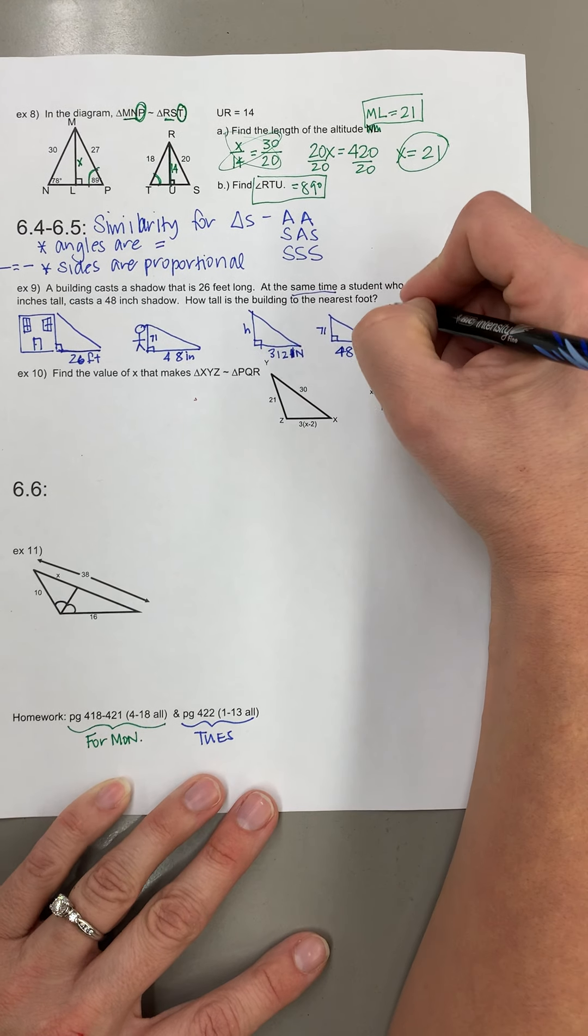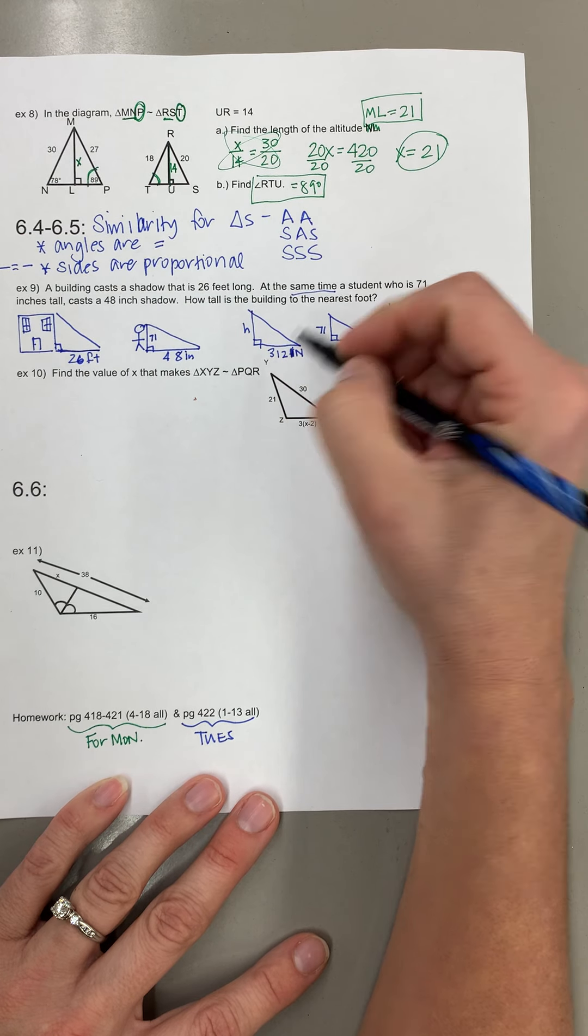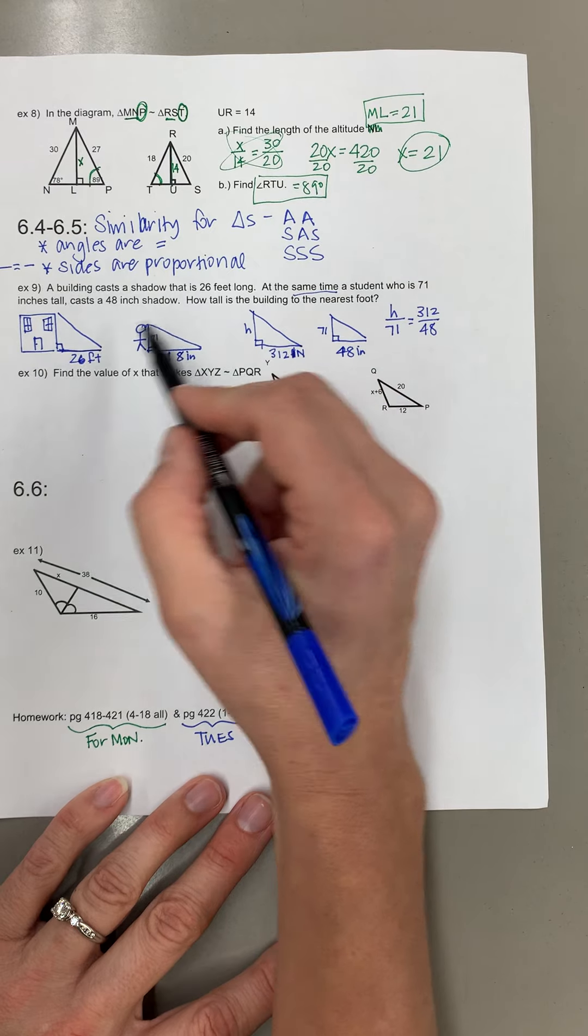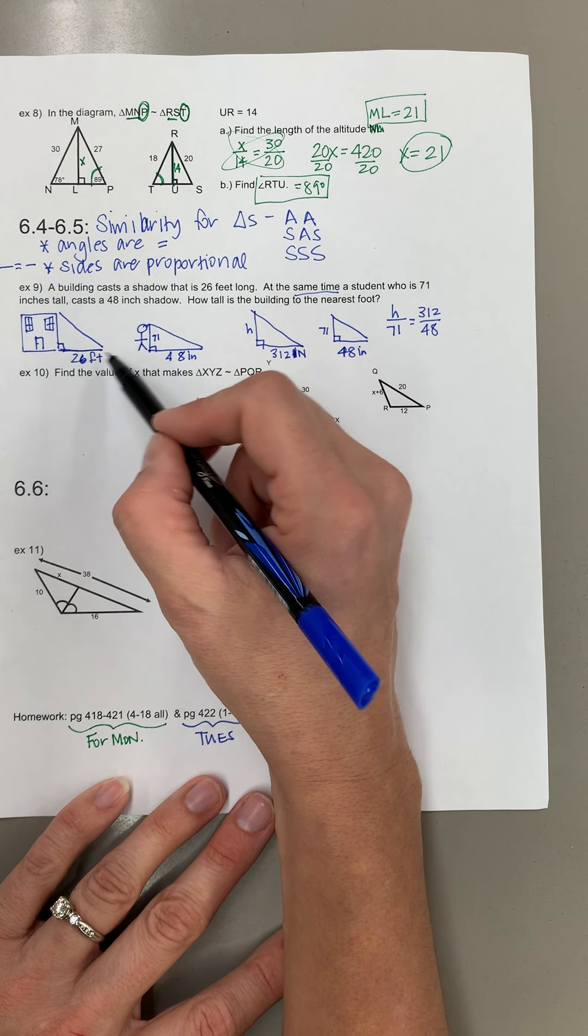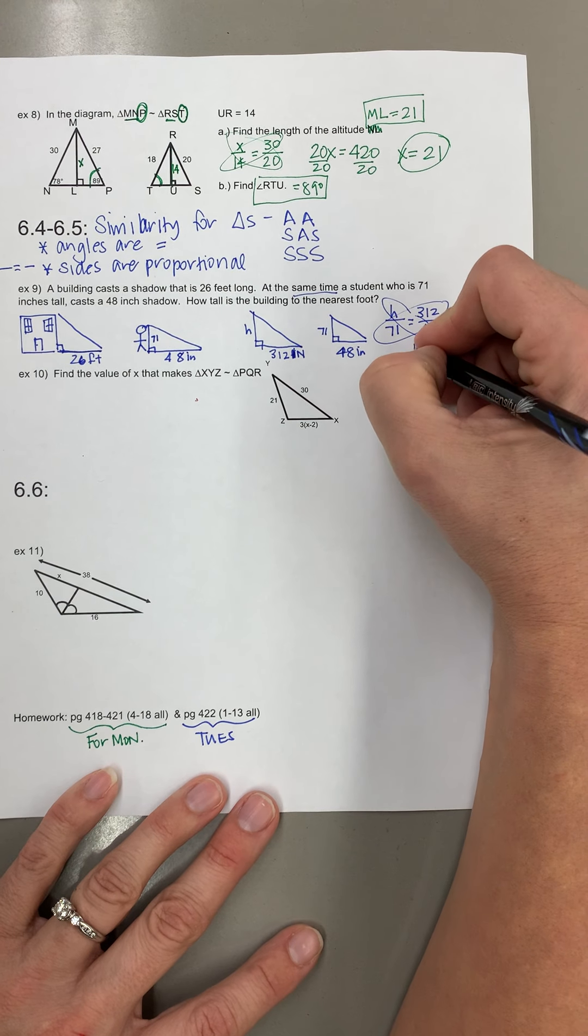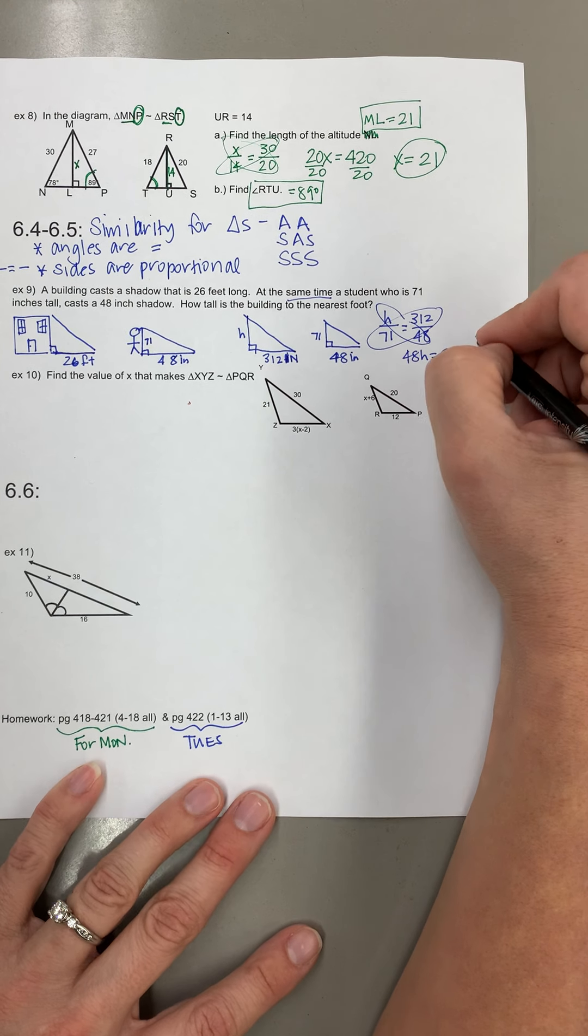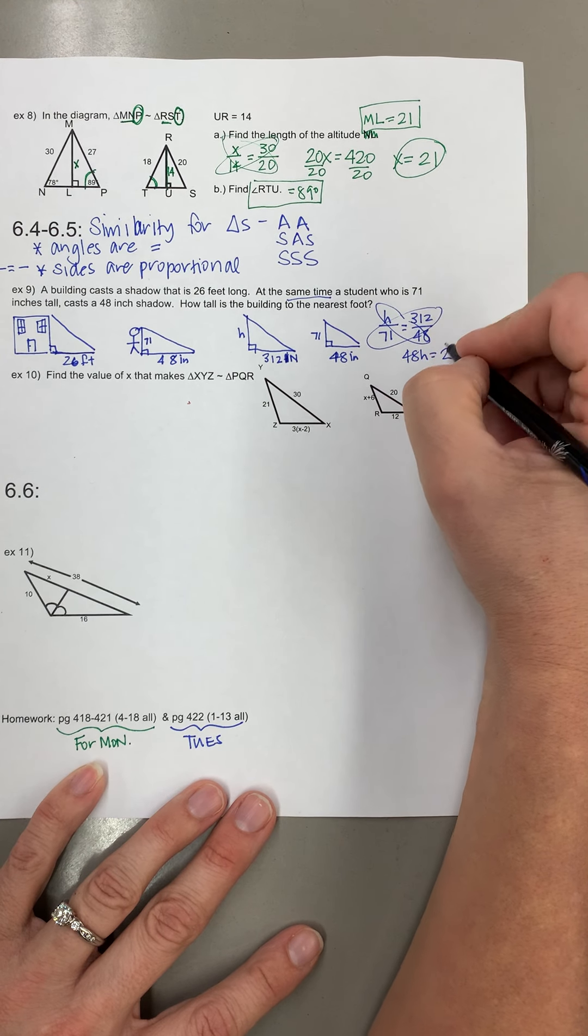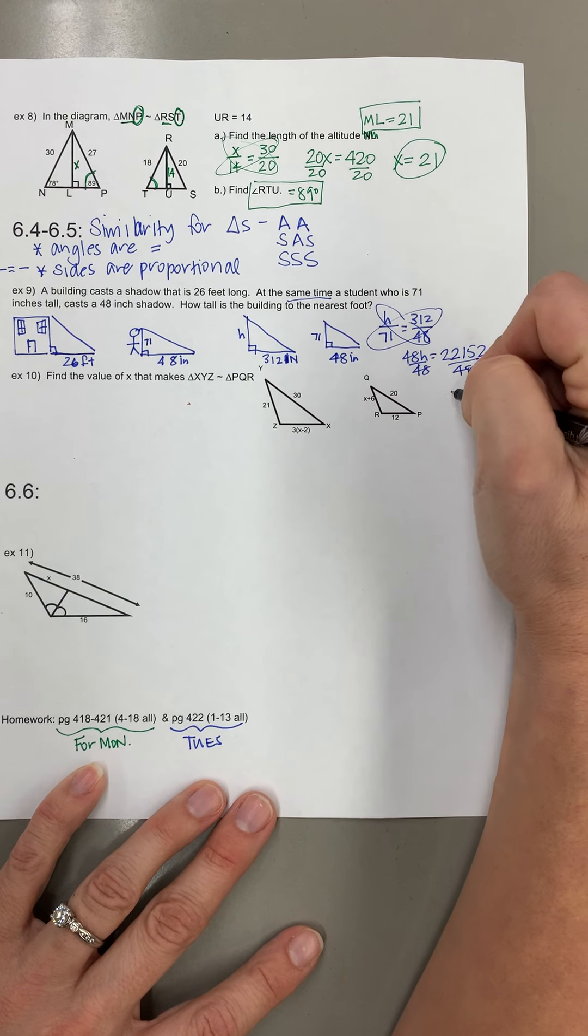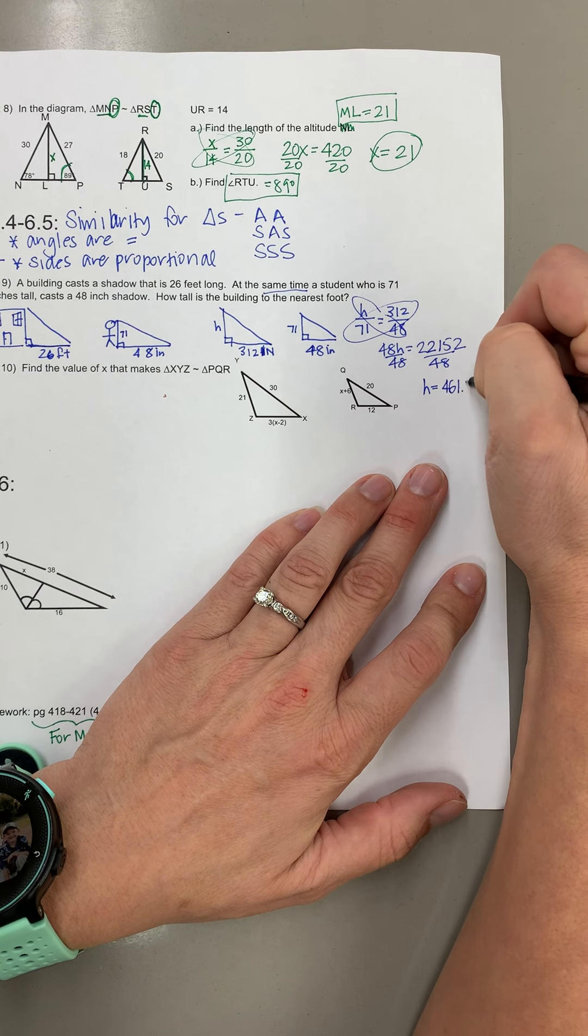So h should go with 71 because it's the height of the student. And 312 should go with 48 because remember 312 is the distance, the shadow in inches. So we get 48h equals 22,152 divided by 48. And we find out the height is going to be 461.5 inches.